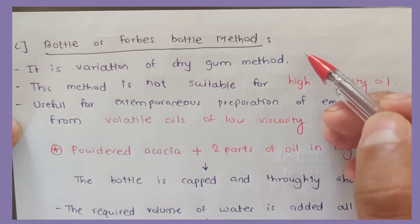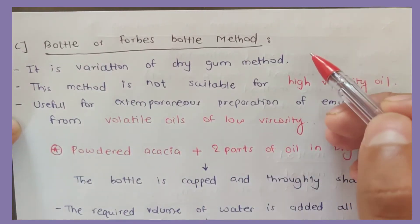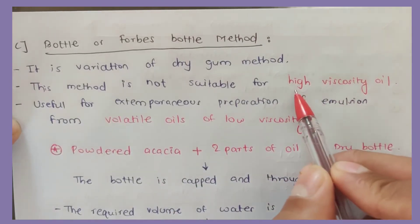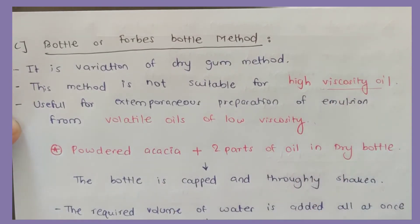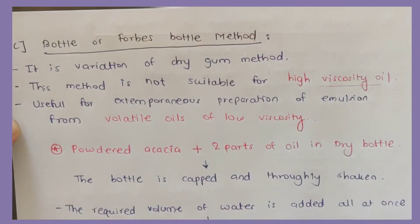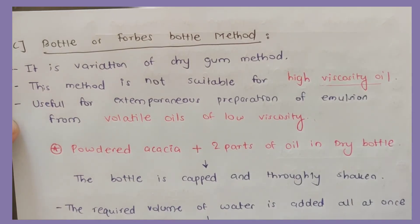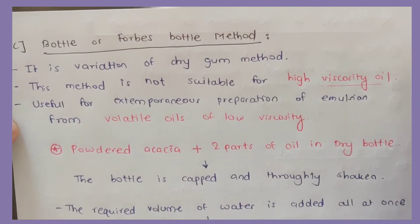Then we have the bottle and Forbes method. This is a variation of the dry gum method. This method is not suitable for high viscosity oils.